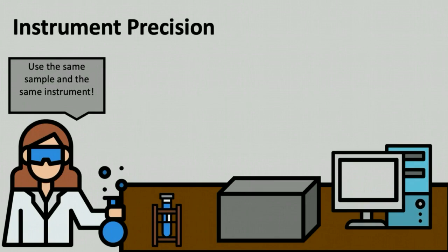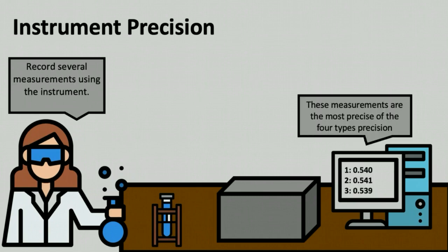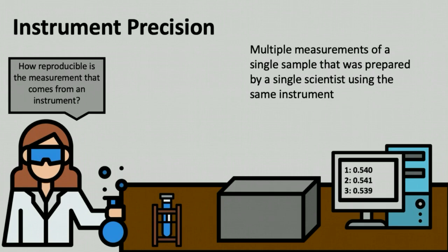In measuring instrument precision, a single scientist performs a single experiment. However, at the very last step, the scientist will take multiple measurements using the same instrument. Instrument precision is usually a very small number and might arise from variations in the amount of sample placed in the instrument or in the instrument's response, depending on the type of instrument. If the instrument precision is poor or gives a large variation in the readings, then the instrument might need to be recalibrated or have other maintenance performed. To summarize, instrument precision provides the reproducibility of the measurement of the instrument and requires that a single sample prepared by a single scientist be measured by a single instrument.